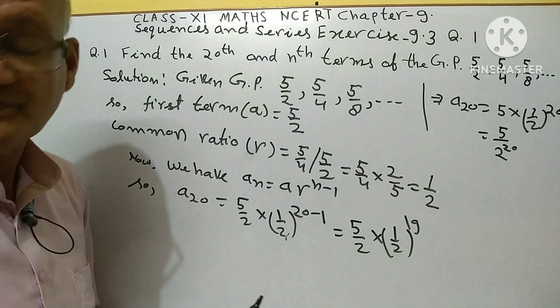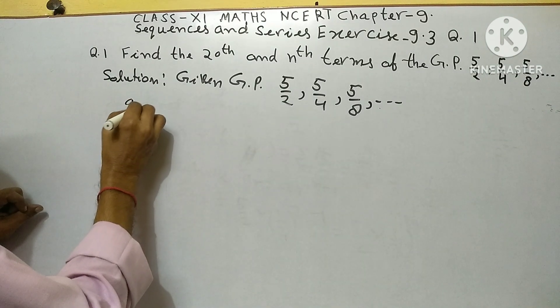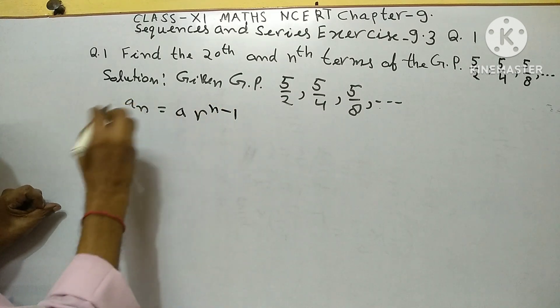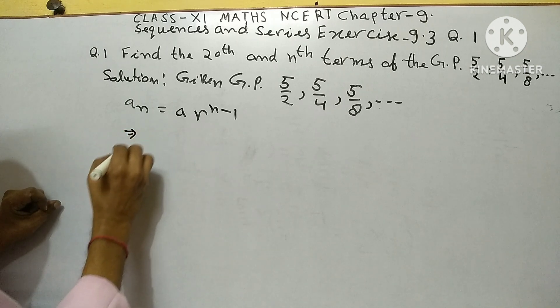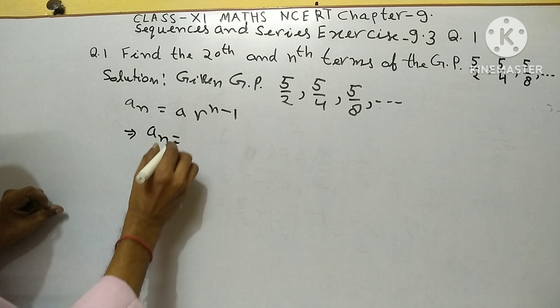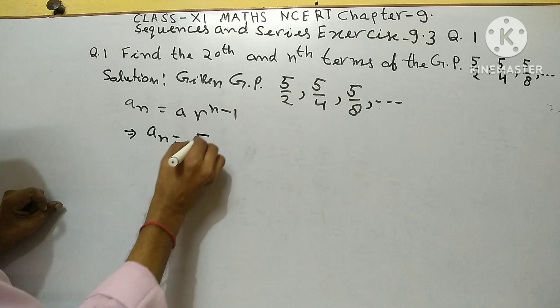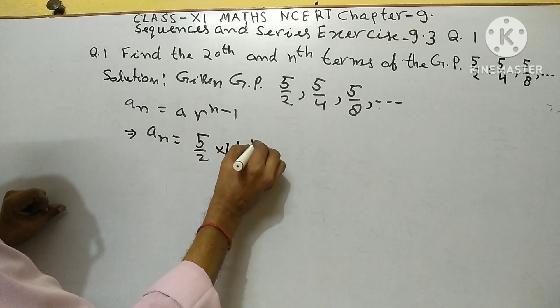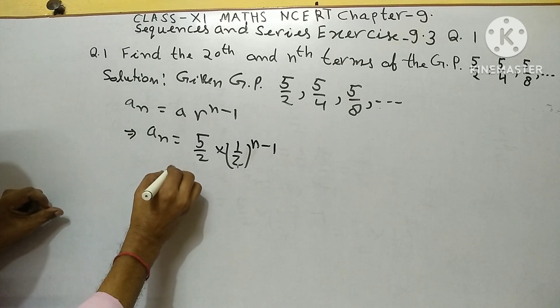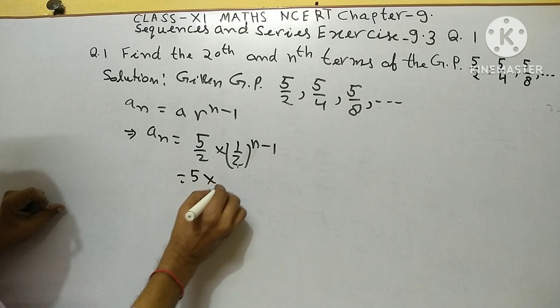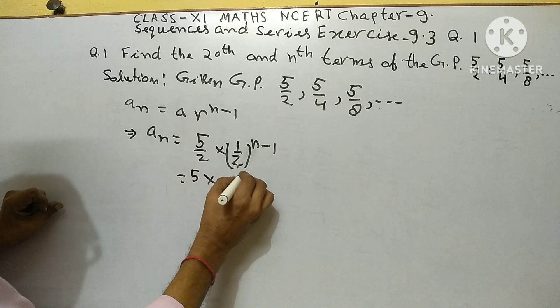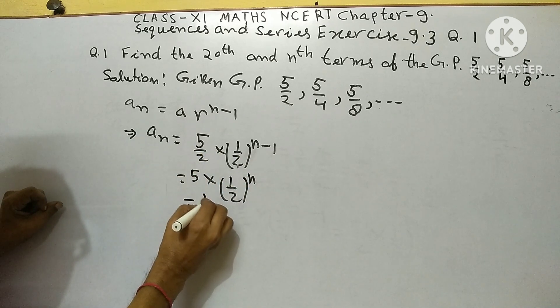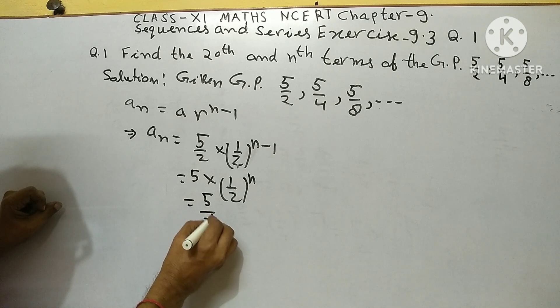Now second part: A_n equals a times r to the power n minus 1. This implies A_n equals a means 5 upon 2 into r means 1 upon 2 to the power n minus 1, equals 5 into 1 upon 2 to the power n, equals 5 upon 2 to the power n.